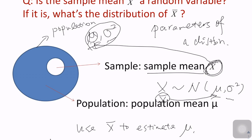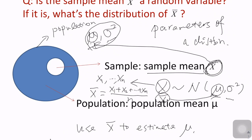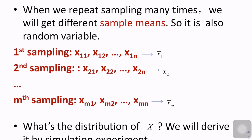This question matters because mu is a constant, but each x_i drawn from the population is a random variable. We draw x_1 through x_n, compute x-bar as their average, and since each x_i is random, intuitively the sum — and therefore x-bar — should also be random. When we repeat sampling many times, we get different sample means, confirming that x-bar is a random variable.